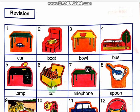Next, a cat. What is this? It is a cat. What color is it? It is brown. It is a brown cat. Where is the brown cat? It is in the yellow box.